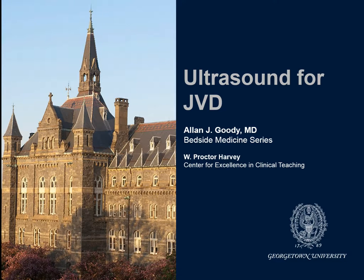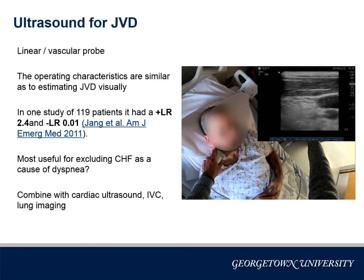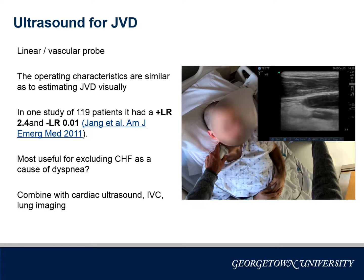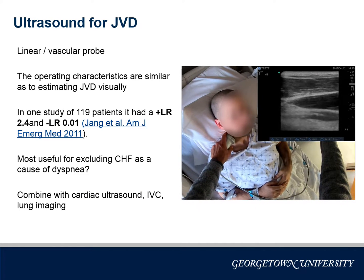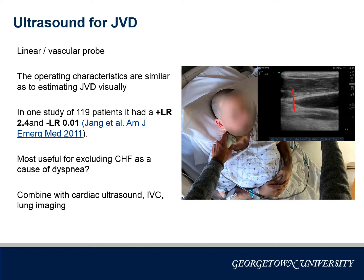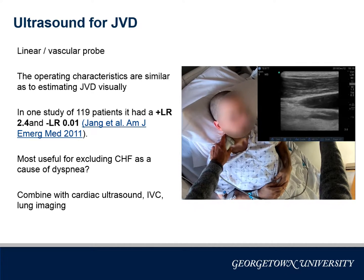This Alan J. Goody Bedside Medicine series video from the Georgetown University School of Medicine is about using ultrasound to find the meniscus of the jugular vein. We will use a linear probe to find the transition point in the internal jugular vein from plump to collapsible. This point represents the same point you would use to estimate the CVP visually.